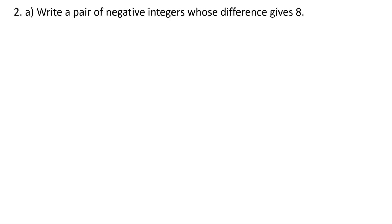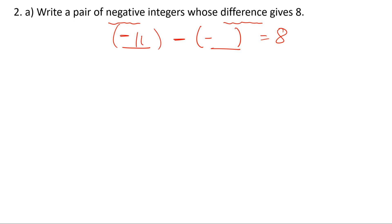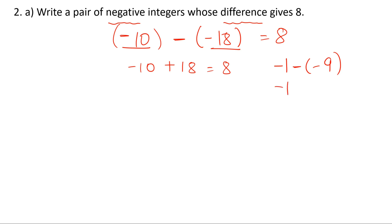Write a pair of negative integers whose difference gives 8. So let's say the first integer is a negative integer, minus — difference means minus — again a negative integer, and that gives 8. The options could be minus 10 and minus 18. When you solve this, you get minus 10 minus minus 18, which equals minus 10 plus 18 equals 8. Or we can take minus 1 minus minus 9, so that would be minus 1 plus 9 which is 8. So you can have different answers. Let's take the first one: minus 10 and minus 18.